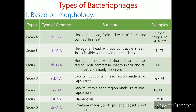Group C has a double-stranded DNA type of genome. Its structure contains a hexagonal head, a tail shorter than its head region, non-contractile sheath in the tail, and tail fibers are not commonly observed. Examples of Group C bacteriophages are T3 and T7. Group D has a single-stranded DNA type of genome. It lacks a tail but contains a head region made up of capsomers. An example is ΦX174. Group E has a single-stranded RNA type of genome. It lacks a tail with a head region made up of small capsomers. Examples are F2 and MS2.